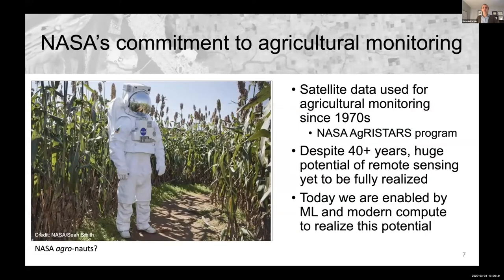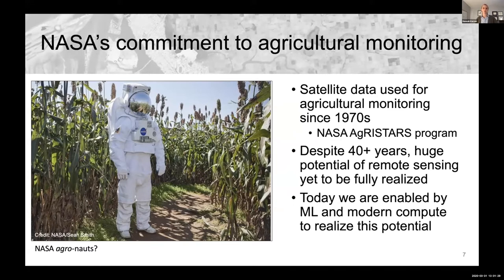NASA has been using satellite data to monitor agricultural systems as far back as the 1970s, starting with the Agristars program. Despite over 40 years of satellite data use for agricultural monitoring, we still haven't fully realized the potential of remote sensing. But today we're in a unique situation enabled by machine learning, modern compute capabilities including GPUs, and new data sources from remote sensing to actually realize this potential.